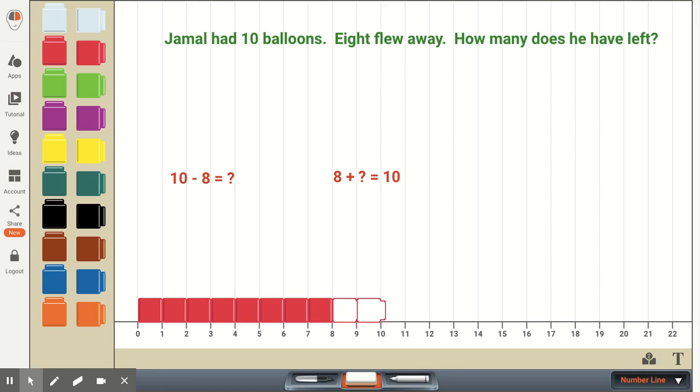What they might find is, yes, they can write this as 10 minus 8 equals something, but they're not sure of the 10 minus 8. And they can write this as 8 plus how many? Then they may be able to more quickly solve this and know that 8 plus 2 is equal to 10.